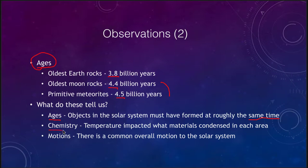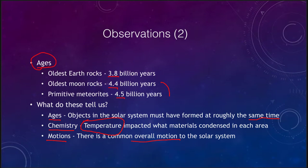In terms of chemistry, we find that temperature impacted what materials condensed in each area. The hotter it was closer to the Sun, the more you were able to condense materials that don't vaporize as easily — things like metals and rocks could condense close to the Sun. When you got further away, you could actually form ices and allow that to form planets as well. The motions tell us that there is a common overall motion to the solar system — we are not just confined to random motions, but there is some overall pattern that we see.